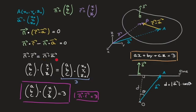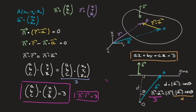The dot product n·a equals the magnitude of n times the magnitude of a times cosine of theta. Since the magnitude of a times cosine of theta equals the distance d, unless n is a unit normal vector, this product will be some scalar multiple of d. Using the fact that n·a = D, we have D = |n| · d, where d is the distance from the plane to the origin. Rearranging, d = |D| / |n|. I'll box this result — it's worth noting.